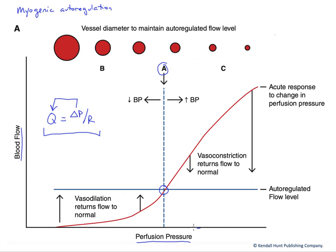If blood pressure were to rise, or perfusion pressure were to rise, or we were in a tissue closer to the heart, that would tend to make blood flow increase — as we can see in Poiseuille's law, delta P drives our flow. We don't necessarily need that increased flow, so the distention of the vessel would stimulate vasoconstriction. We can see the vessel cross-sections getting smaller here. As the radius of our vessels gets smaller, our resistance goes up dramatically, reducing our flow back to our autoregulated normal level.